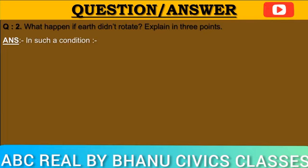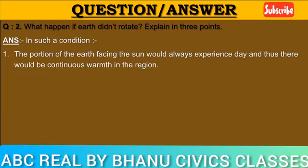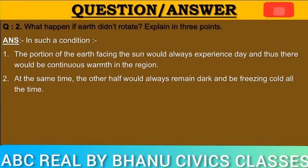Question number two: What would happen if the earth didn't rotate? Explain in three points. Answer: In such a condition, first, the portion of the earth facing the sun would always experience day, and thus there would be continuous warmth in that region.